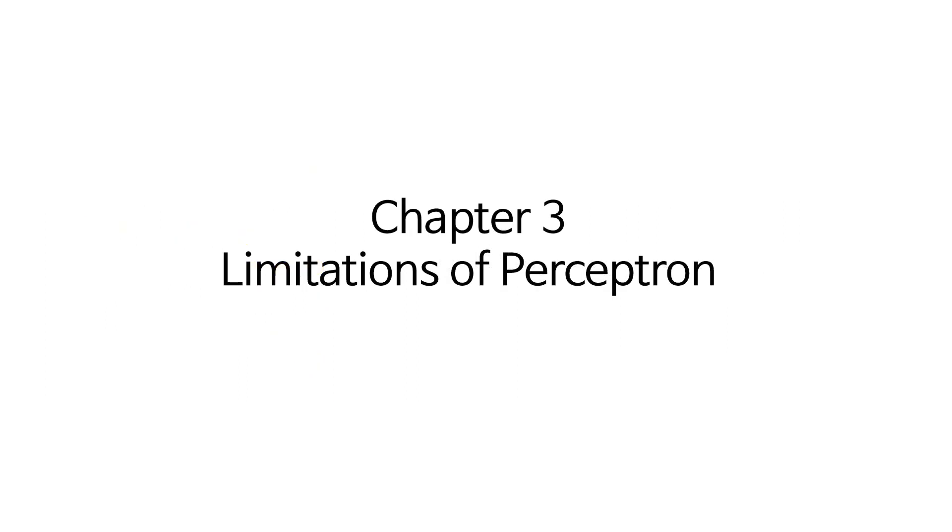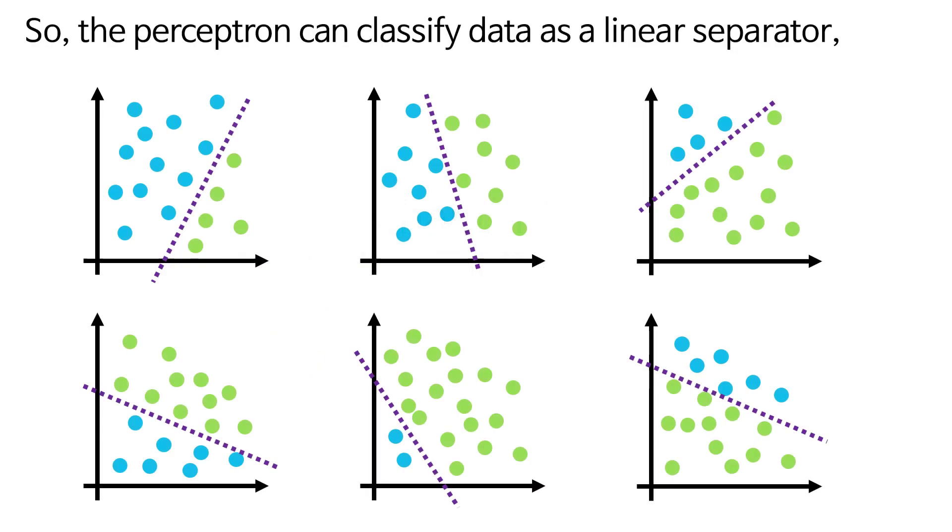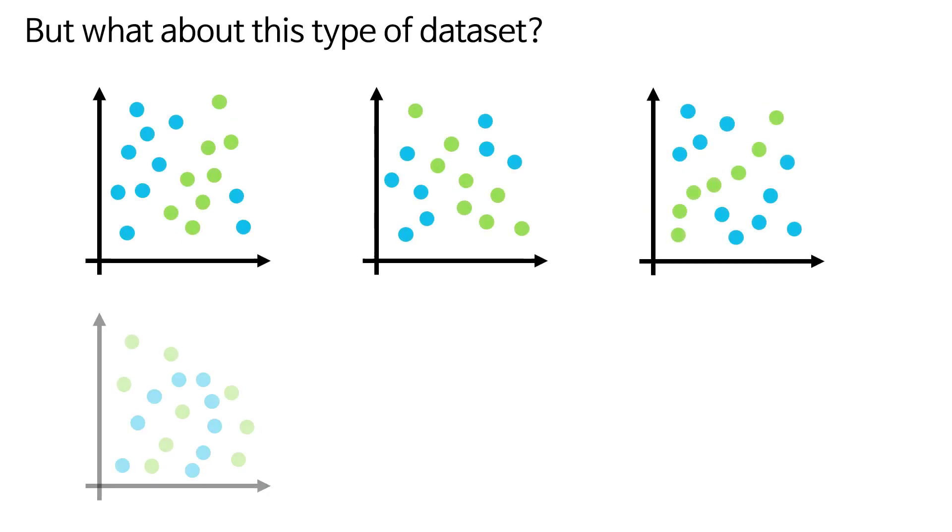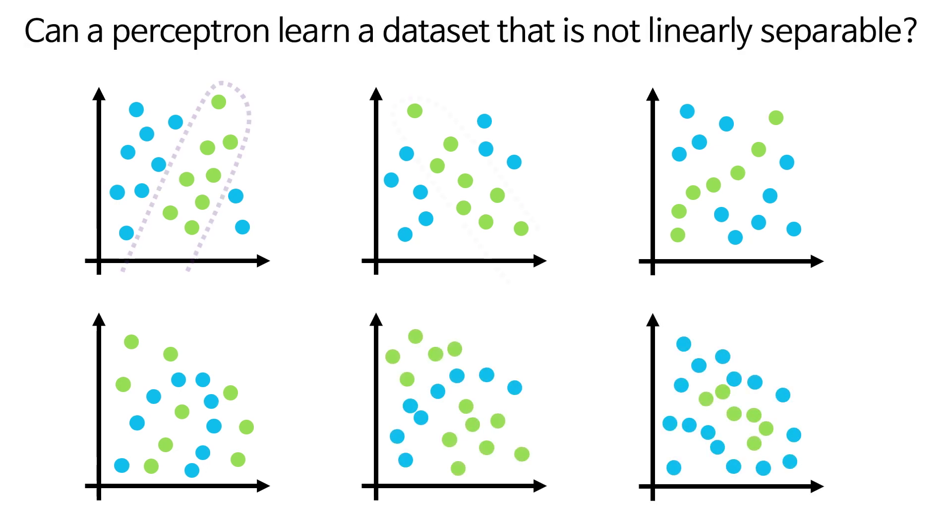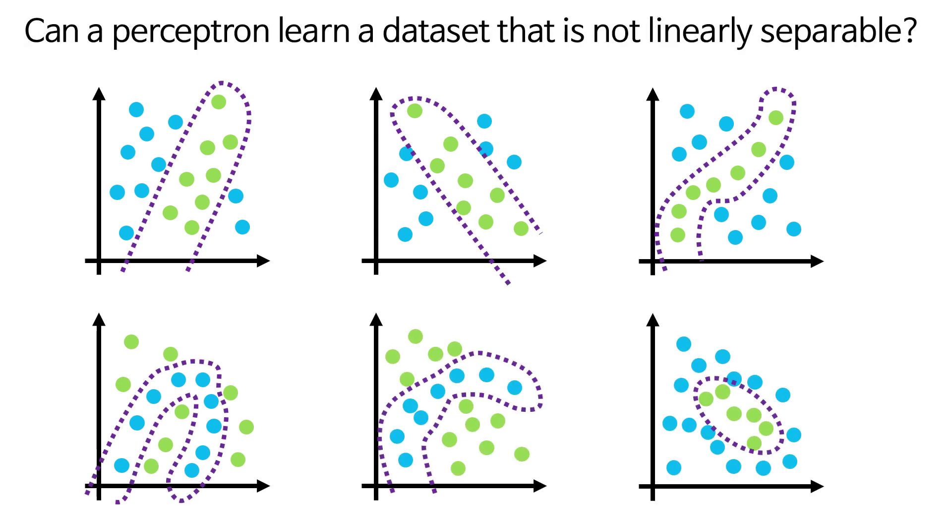Chapter 3: Limitations of Perceptron. So the Perceptron can classify data as a linear separator, but what about this type of dataset? Can a Perceptron learn a dataset that is not linearly separable?